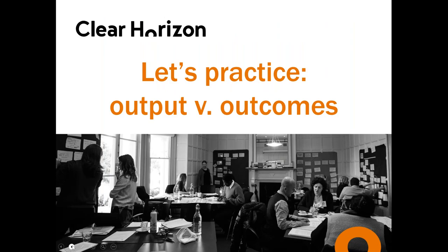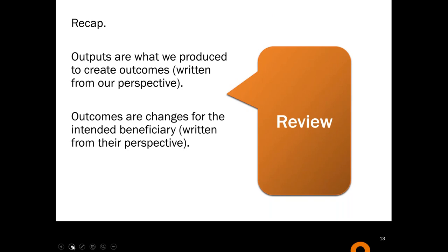Let's do some practice. Outputs are what we produced to create outcomes, written from our perspective. Outcomes can be written as 'I' statements. So for Andy, the outcome might be a change in her knowledge or an increase in skills, so she's able to ride a bike — you can put that in 'I' statements. When we write them in a bigger diagram we'll remove the 'I' statements, but writing 'this is what's changed for me' helps make it really real.